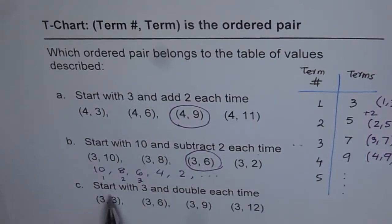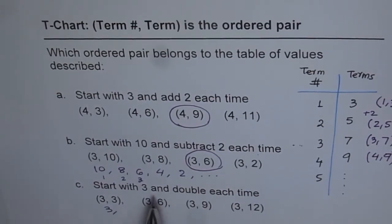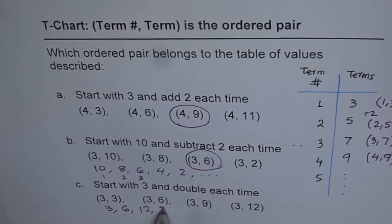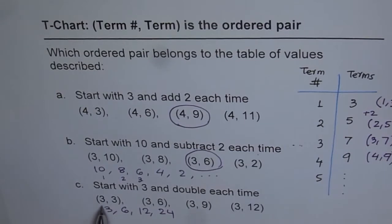Next one is start at 3 and double each time. So here also, you can make a pattern. That is 3 and then you have to double each time. So next term will be 3 times 2, which is 6. And then next will be 6 times 2,